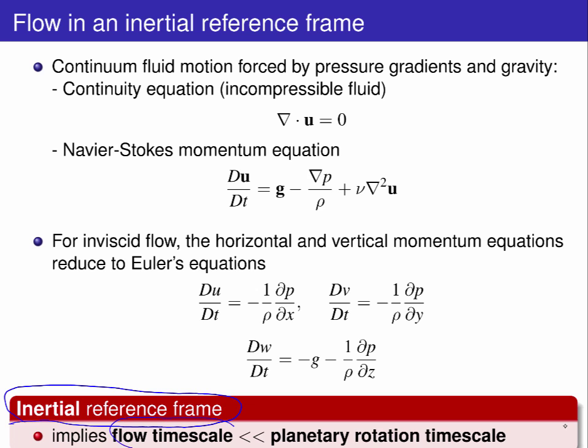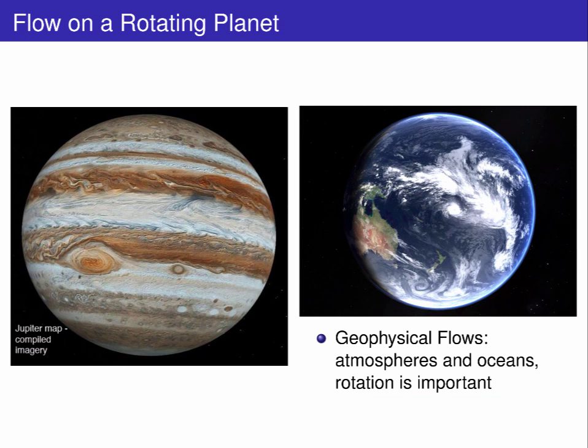Now, planets rotate and thus do not provide an inertial reference frame. So far, we have been able to overlook the fact that Earth is rotating, because the flows that we have been interested in have timescales much smaller than the planetary rotation timescale. It is not always the case that background rotation can be ignored. For instance, if we want to understand the dynamics of the bands on Jupiter, or those governing destructive weather events like cyclone Winston, we need to account for the effects of planetary rotation.